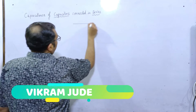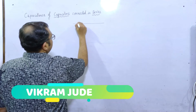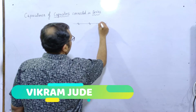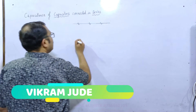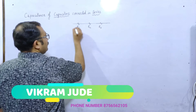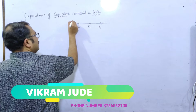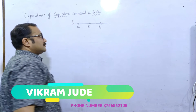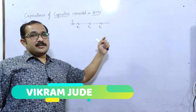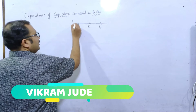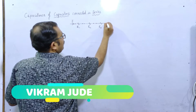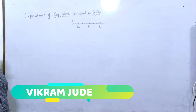अगर हम लोगों ने पढ़ा है — आपके पास R1 है, आपके पास R2 है, आपके पास R3 है। तो यहाँ से जब Current flow करता है, तो Current का amount जो इससे flow कर रहा है, वही flow कर रहा है। R1 यहाँ से यहाँ तक है, फिर R2, फिर R3 — इस तरह जोड़ दिया गया है।